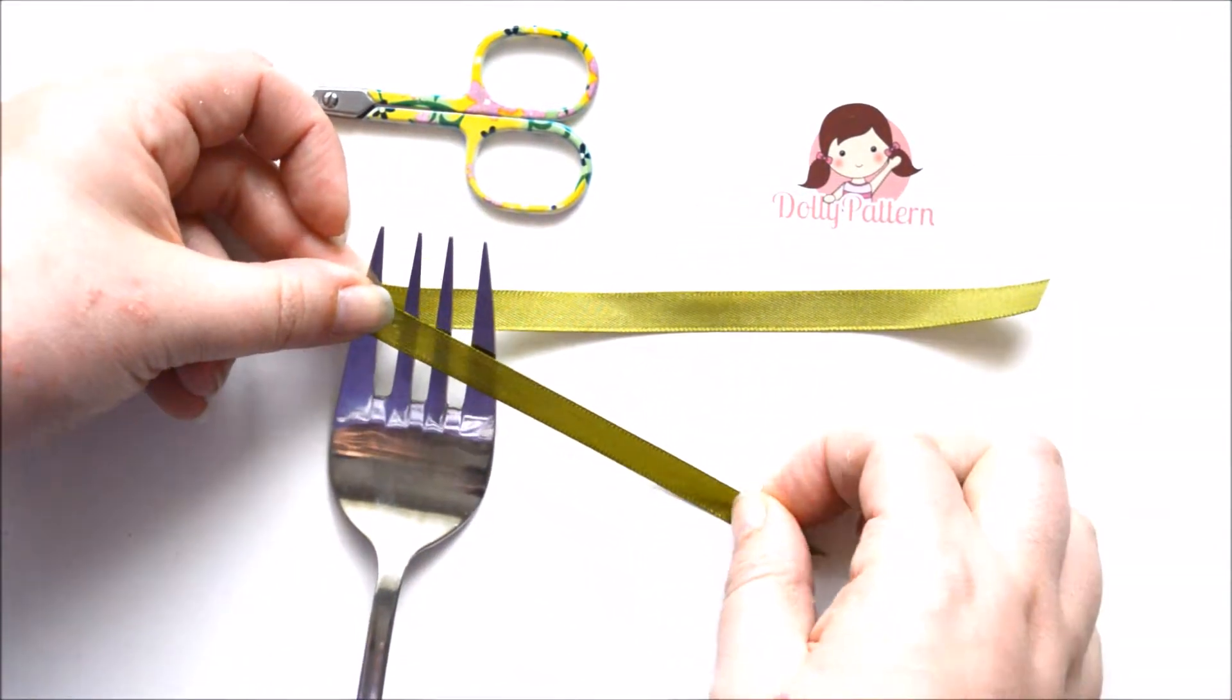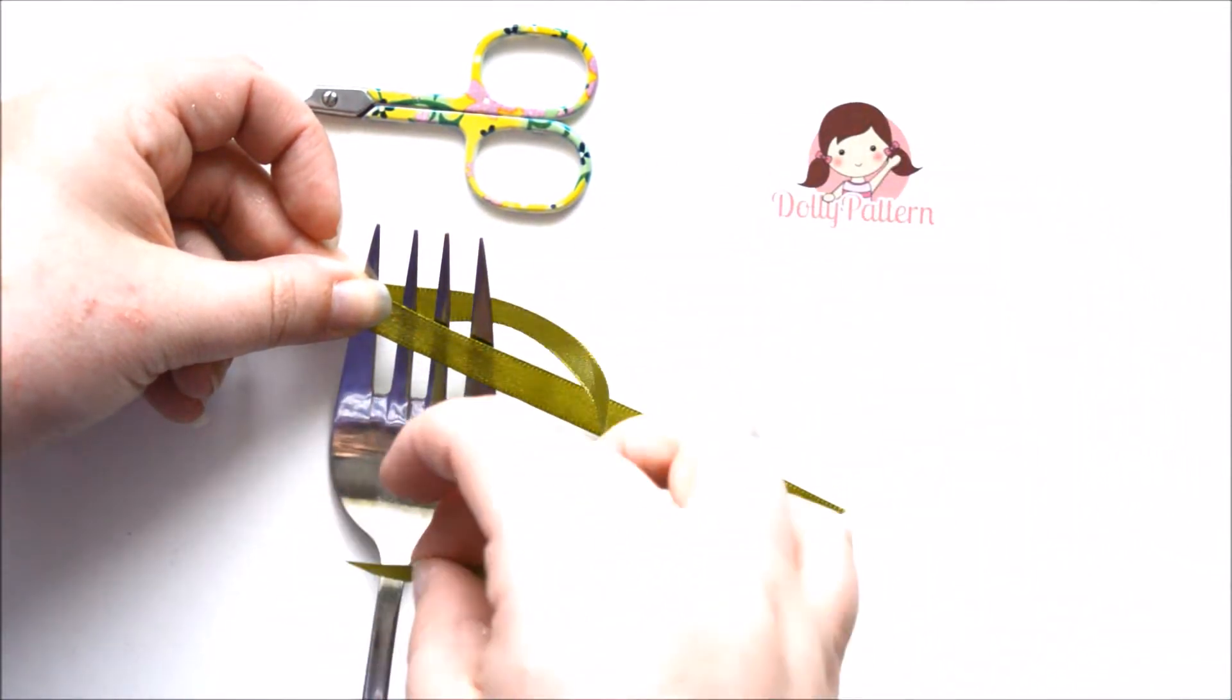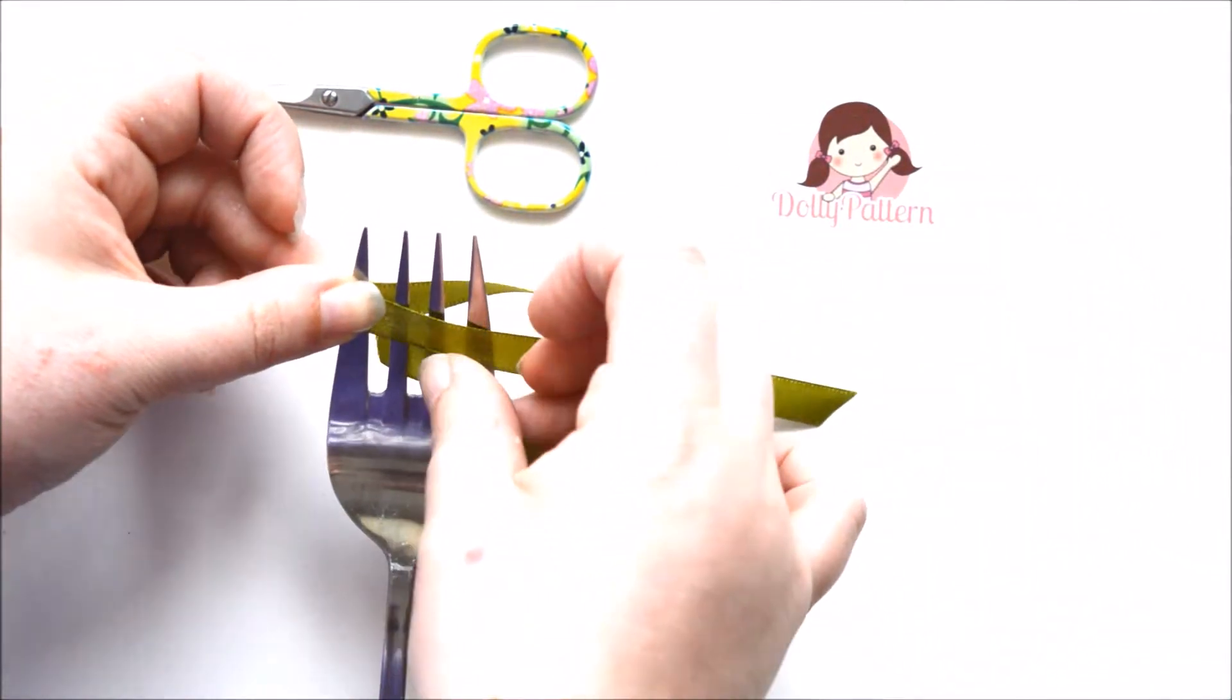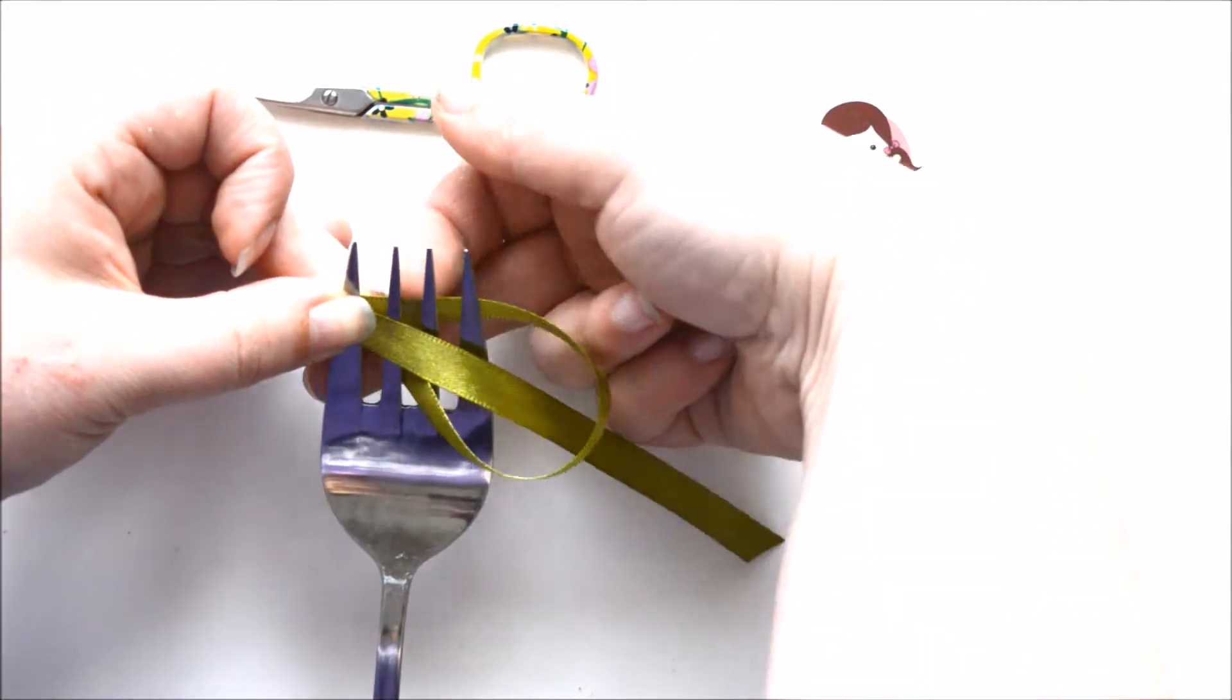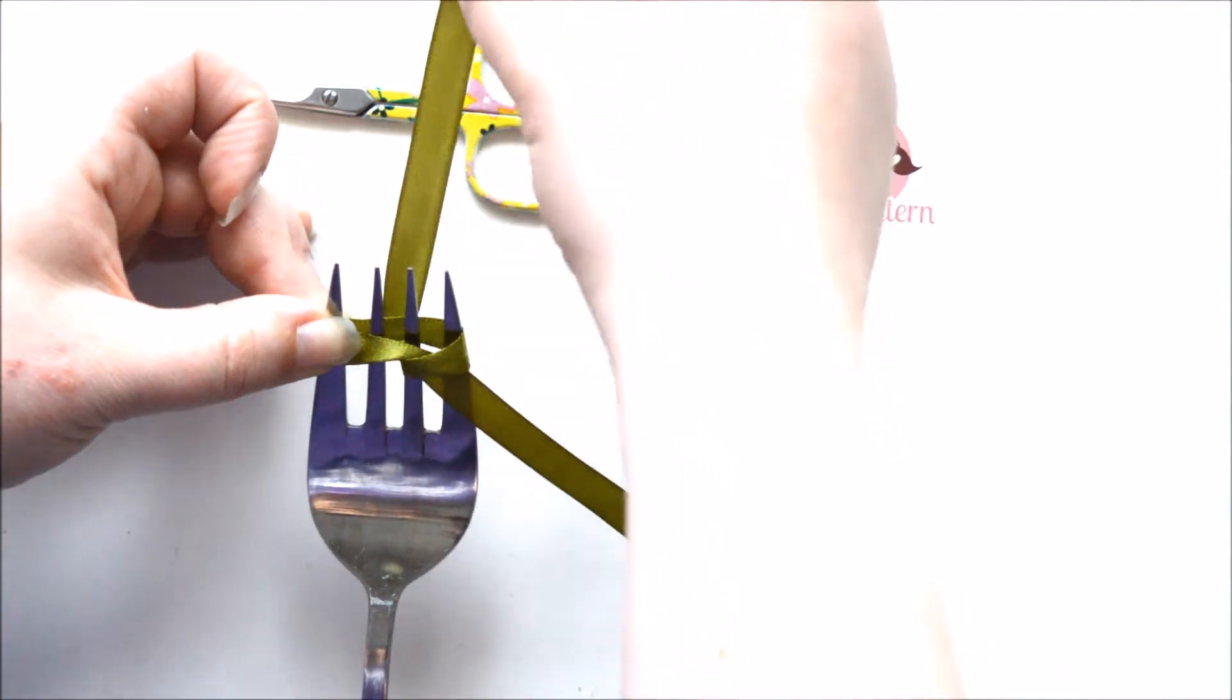Okay, so what we're gonna do now is, holding this end, we're gonna take this and pass it over the other tail and through the fork tine like that. You can see the magic happening. Now we're gonna bring it over the top, back through there.